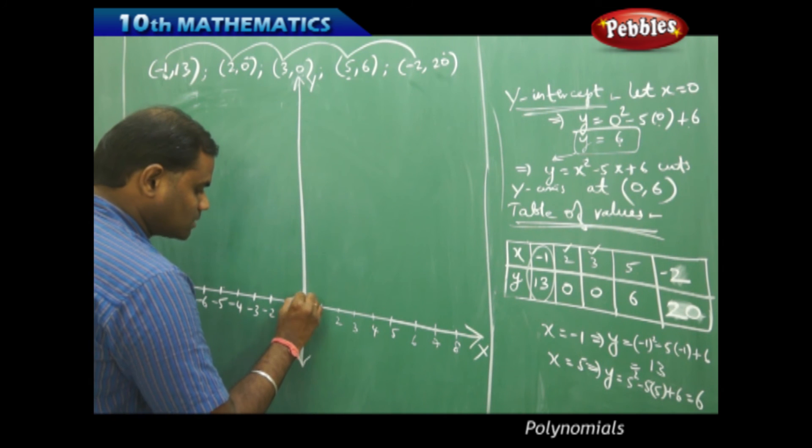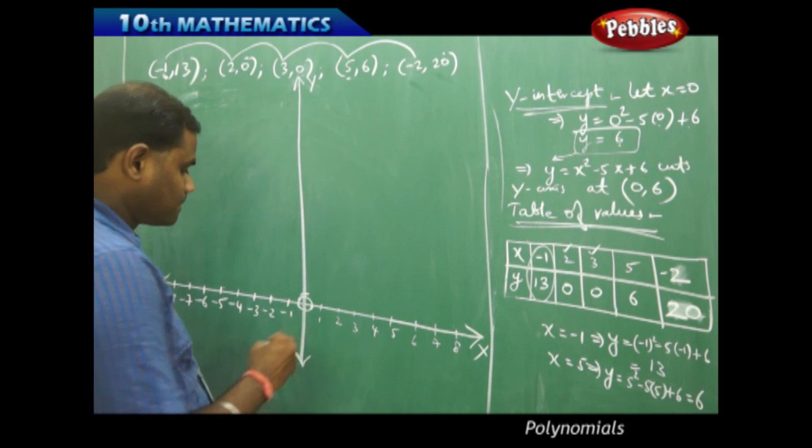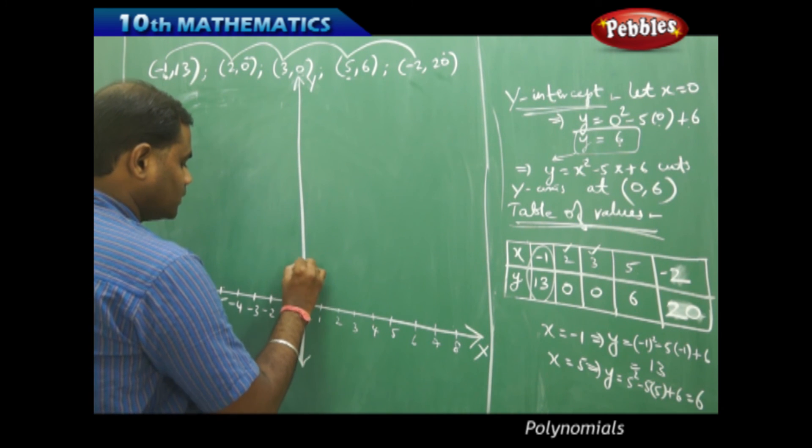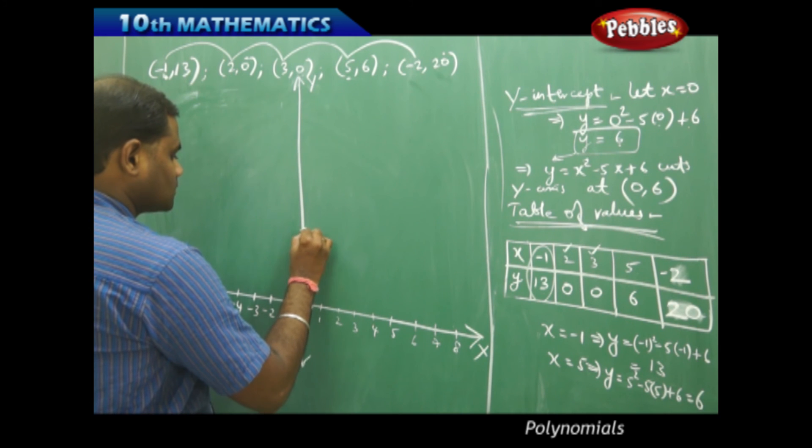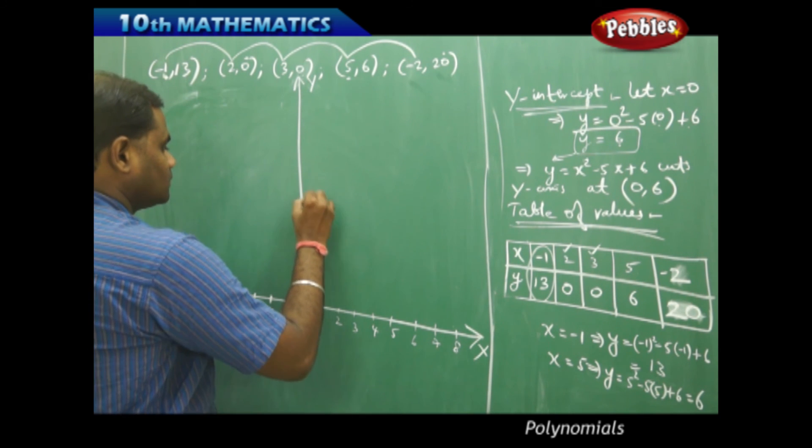So, in the scaling here, I take small scale because I need to fit in 20 values. So, I take 1, 2, 3, 4, 5, 6, 7, 8.